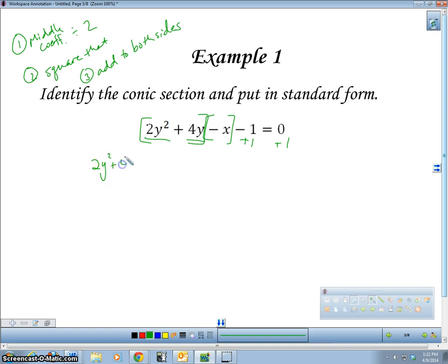So we're going to go 2y squared plus 4y, we're going to leave a little space, minus x equals 1. The first thing we want to do is when we're completing the square, we have to make sure that the coefficient of the x squared or the y squared is 1. This is really important.